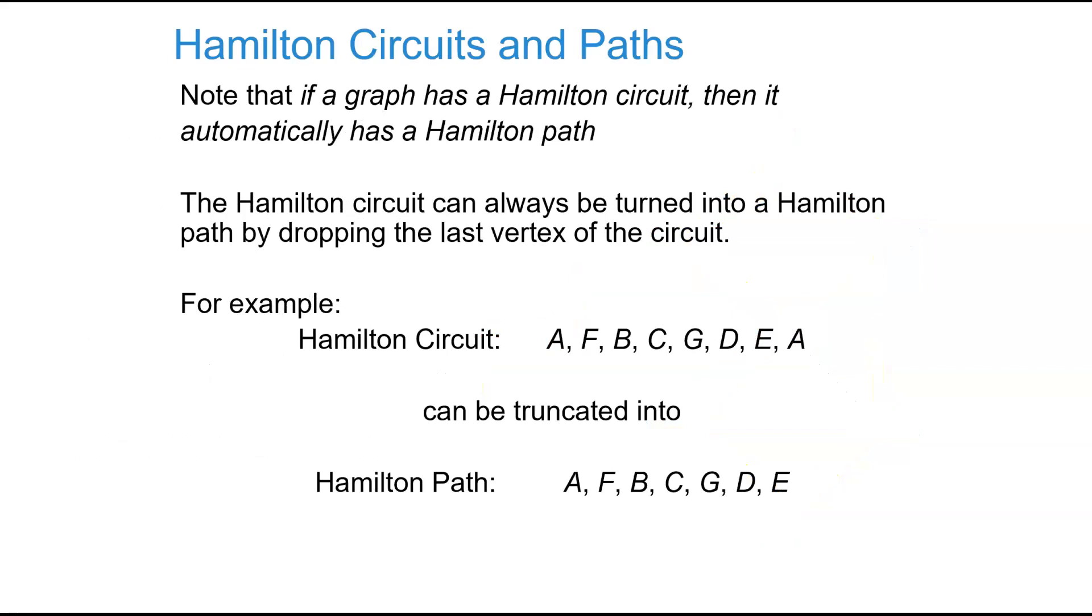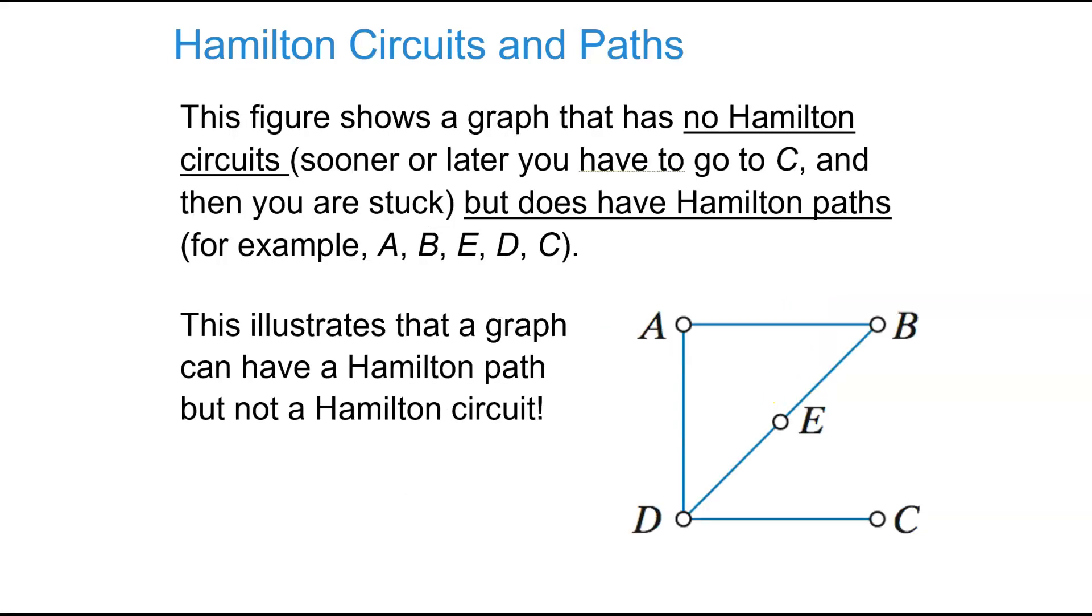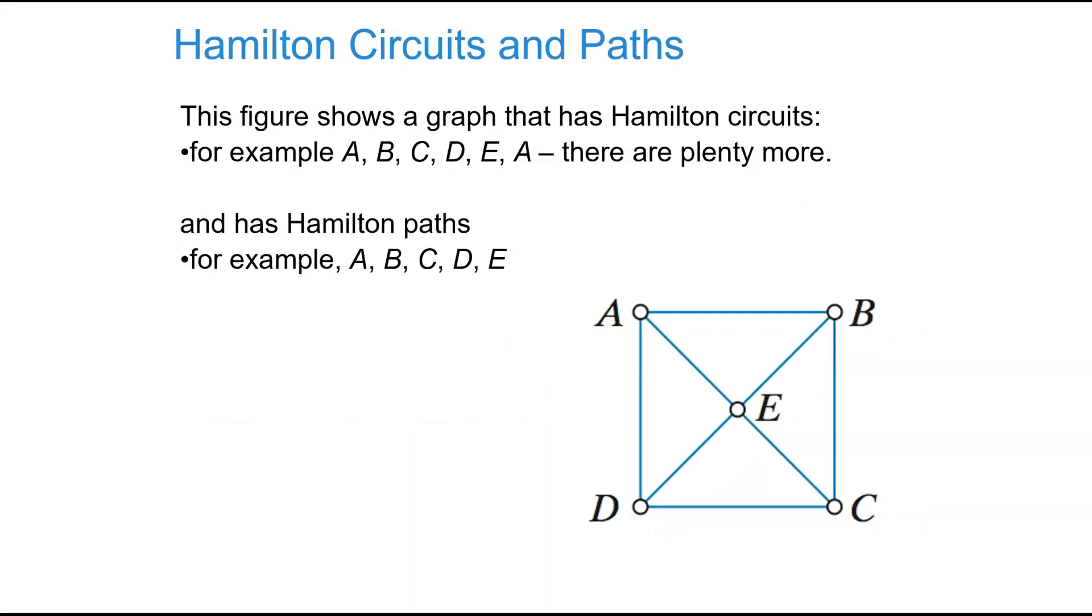Now, if the graph is a circuit, it automatically is a path. So this was the circuit we just did. But if I eliminate the return to start, it becomes a path. So the figure shows a graph that has no circuits, but it does have paths. Because once we get out to C, there's no way we can get back to our starting point without revisiting any vertices. So this is a circuit. We could do A, B, C, D, E, A. And the path would just not have us go back.